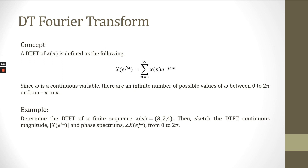A discrete time Fourier transform of Xn signal is defined by the equation: X e^(jω) equals the summation from n equal to 0 until infinity of signal Xn multiplied with e^(-jωn). Since omega is a continuous variable, there are an infinite number of possible values of omega between 0 to 2π or from negative π to π.